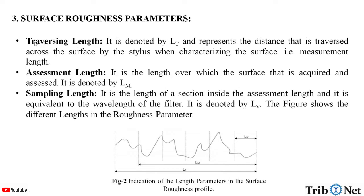The surface roughness parameters. First one: traversing length. It is denoted by LT and represents the distance that is traversed across the surface by the stylus when characterizing the surface, i.e. measurement length. Here we can see LT in the figure.